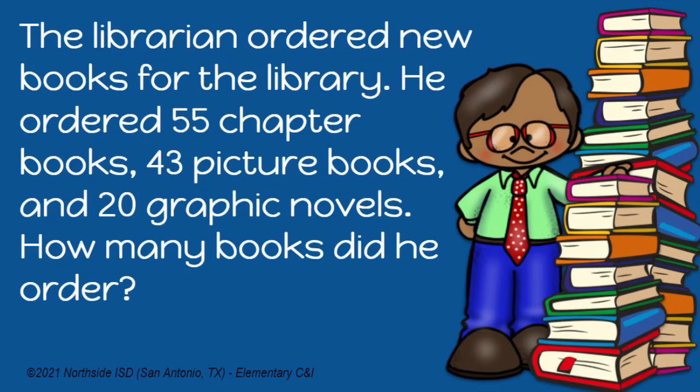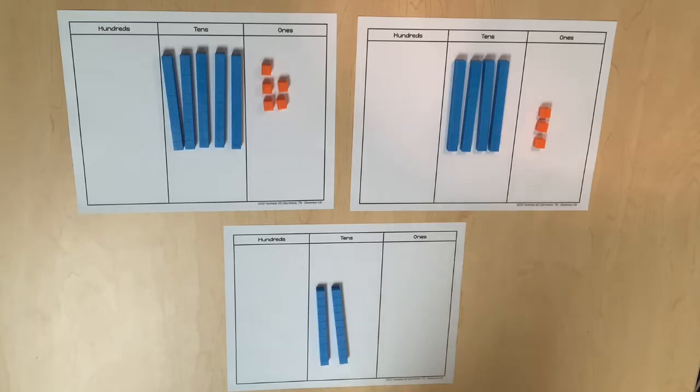Let's use a real-world scenario to add three two-digit numbers using base ten blocks. The librarian ordered new books for the library. He ordered 55 chapter books, 43 picture books, and 20 graphic novels. How many books did he order? Each set of books ordered has been represented with base ten blocks on a place value chart.